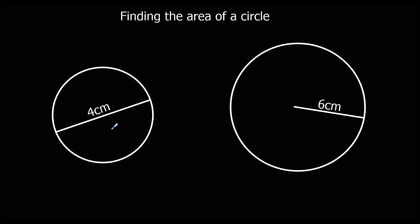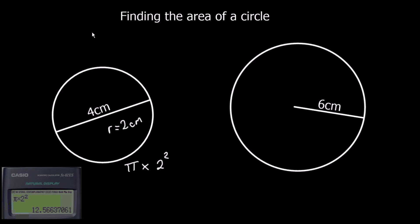Okay, so the first one here, we've got a radius of 2 centimeters. We're going to do pi times 2 squared to find the area. We can type that in the calculator, press the S to D button, and it's going to give us 12.6 centimeters squared to one decimal place.